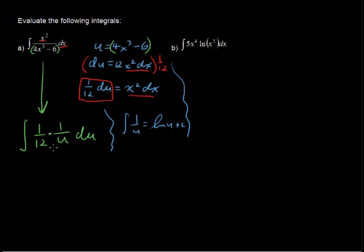1 over 12 is just a constant, so that's just going to tag along. So I'm going to have as my next step, 1 over 12, times the natural log of, it's actually the absolute value of, we've got to be very careful there, it's the absolute value of u. And then plus c.